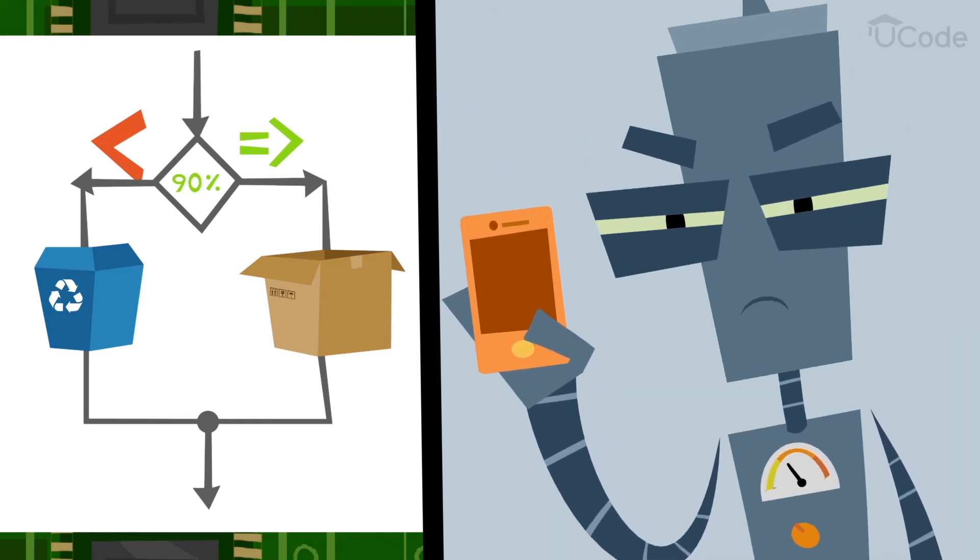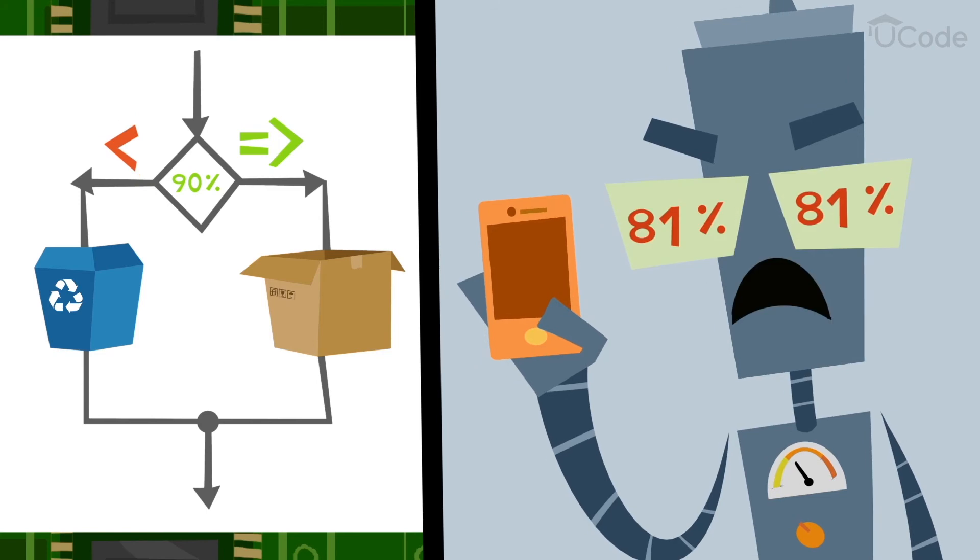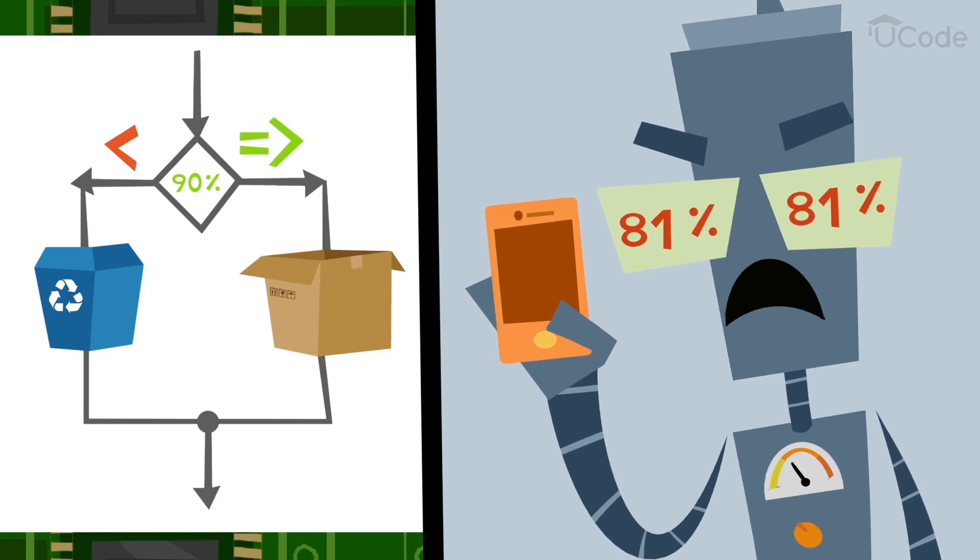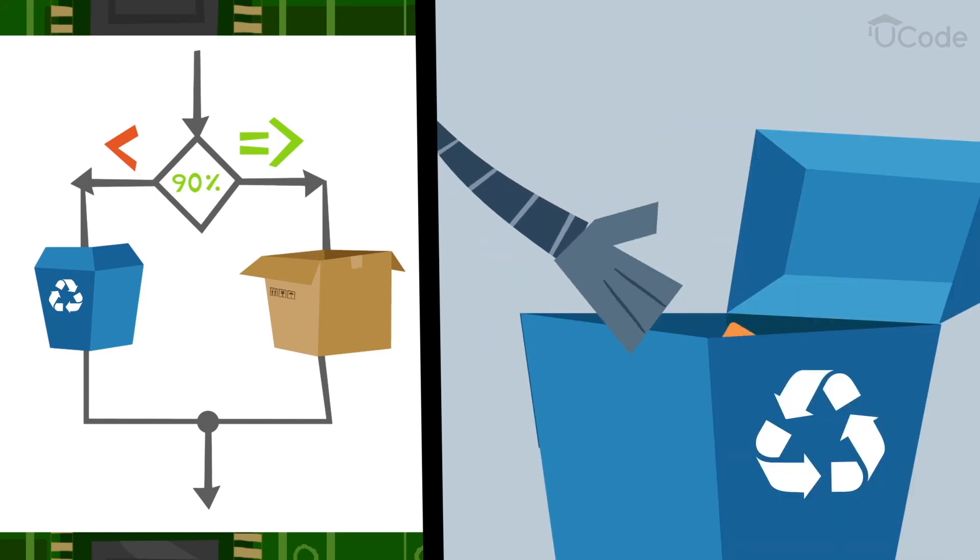If the test score is 89 or lower, the condition is said to be false, and the program instructs the robot to reject the phone.